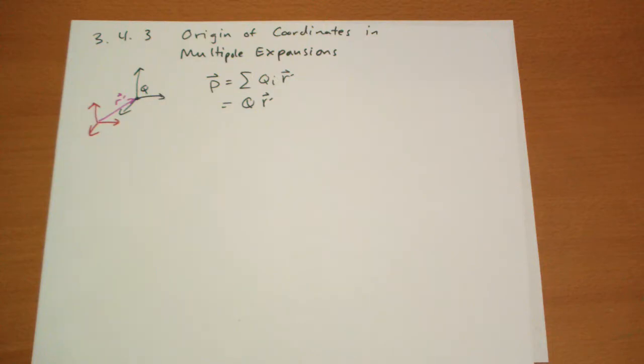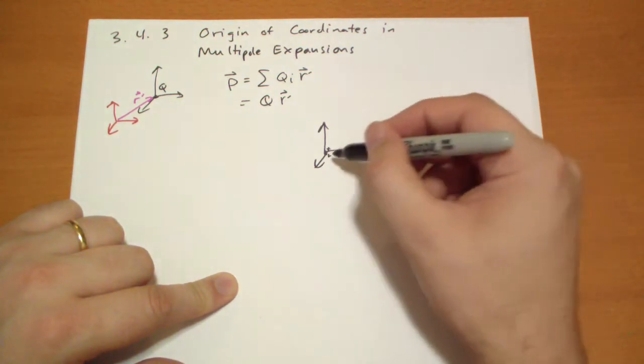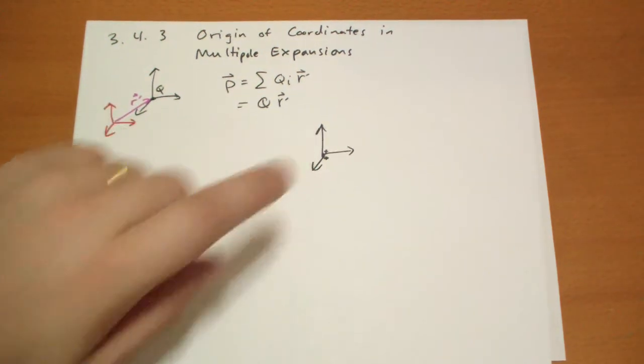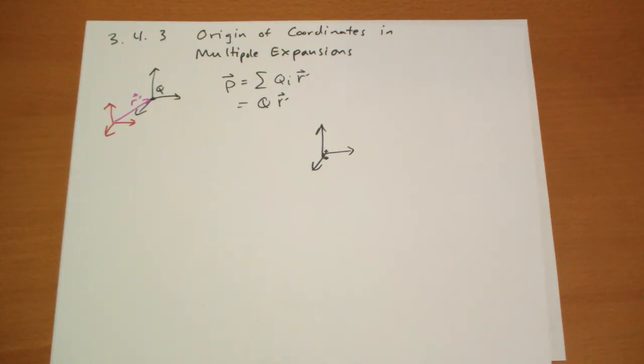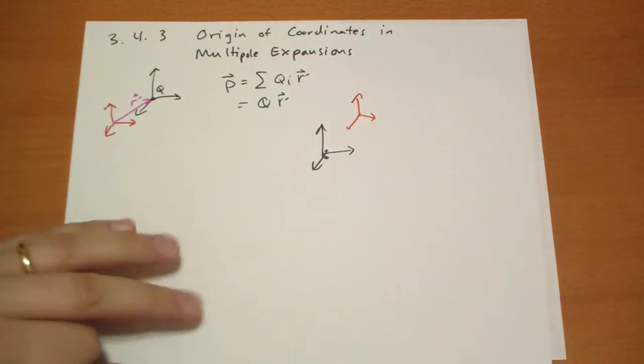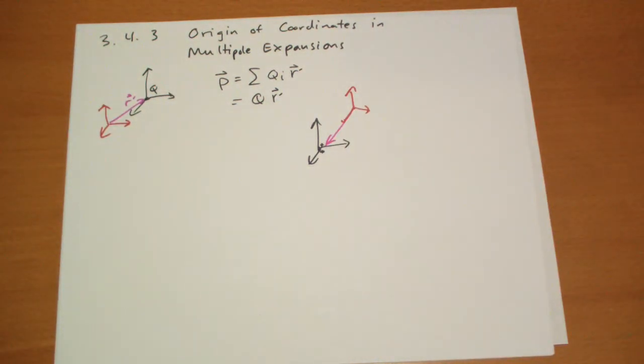The interesting thing is if the total charge is zero, then the choice of origin does not matter for the dipole moment. It doesn't change at all. Just like the monopole term doesn't change, it's always going to be the net charge no matter how it's allocated. If the total charge is zero, then the dipole moment is constant. It doesn't change based on which origin you choose. So I could have chosen that origin where it's sitting there right in the middle, or I could have chosen this frame of reference. Those have the same dipole moment.